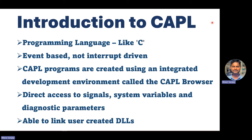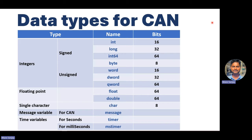Now, what are the different data types used in CAPL when you are working on CAN? The major ones are integers, floating points, single character, message variable, and timer variable. The last two are very important and differ from C programming. Integers are very common — signed and unsigned — two types.